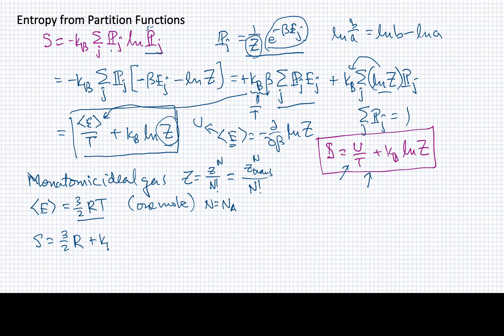What about the rest of this stuff? I'm going to have plus KB, and now for this log of Z, I'm going to have a log of Z to the n, the molecular partition function over n factorial.